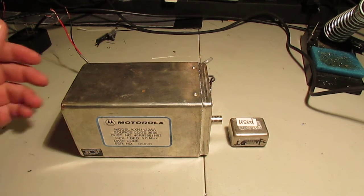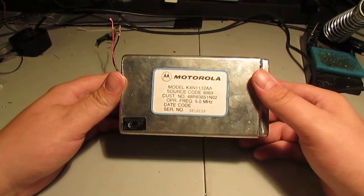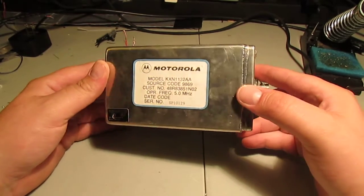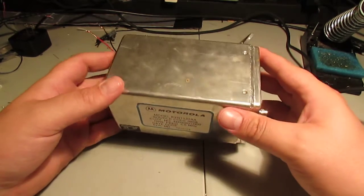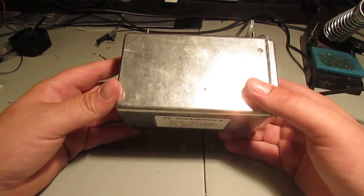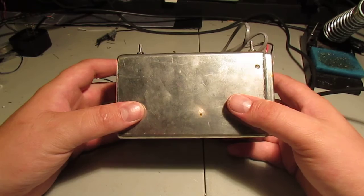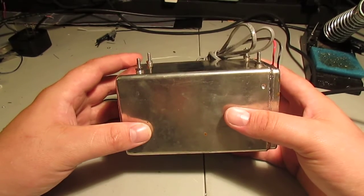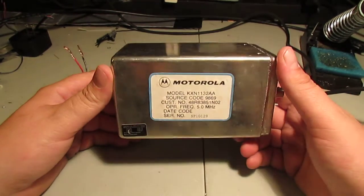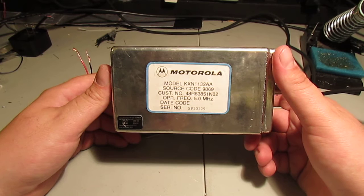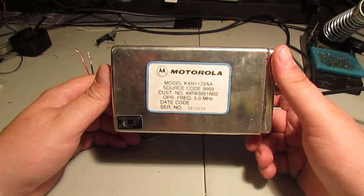I recently acquired this. This is a Motorola 5 MHz oven controlled oscillator. It came out of a MyCore paging station. And it is rumored, from what I am told, from someone who knows these things better than I do, to be extremely accurate. This is what they used to perform simulcast paging with. So it's supposed to be an extremely accurate oscillator.